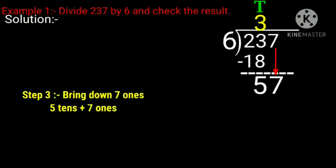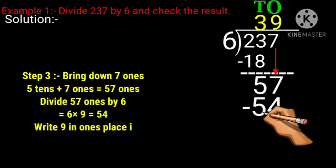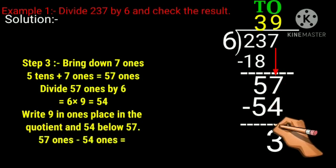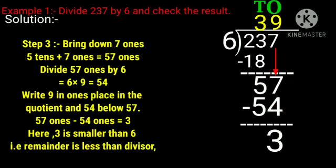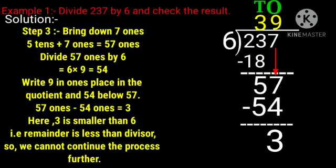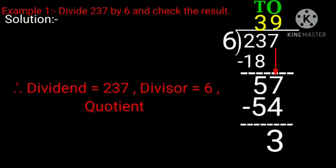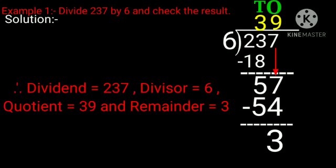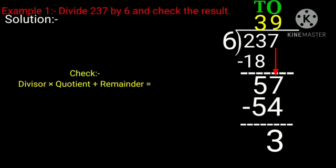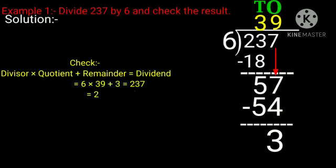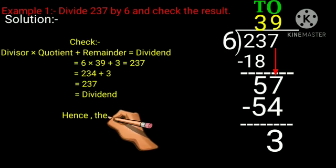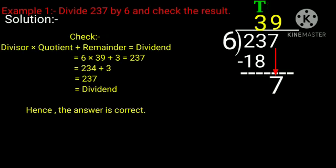Now bring down 7 ones. 5 and 7 will make 57. Divide 57 by 6. We know that 6 nines are 54. Write 9 in ones place in the quotient and 54 below 57. 57 minus 54 equals 3. The remainder is less than the divisor, so we cannot continue the process further. Therefore, dividend equals 237, divisor equals 6, quotient equals 39, and remainder equals 3. Check your answer: divisor into quotient plus remainder equals dividend. 6 times 39 plus 3 equals 237. 234 plus 3 equals 237. Hence the answer is correct.